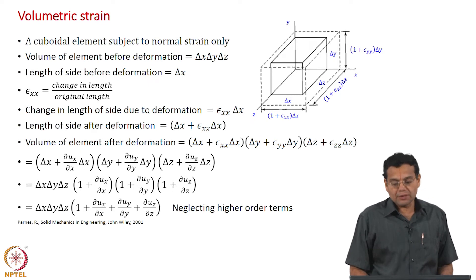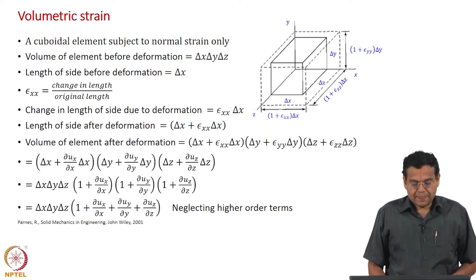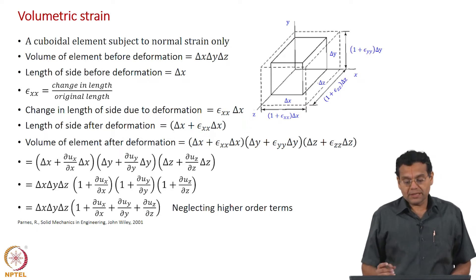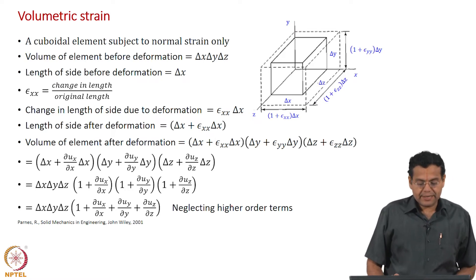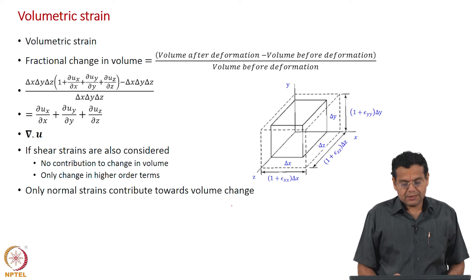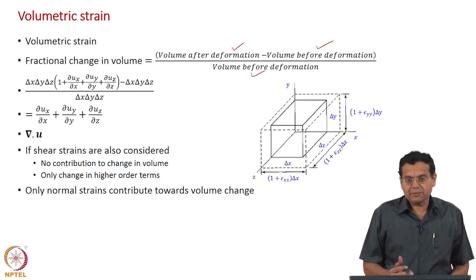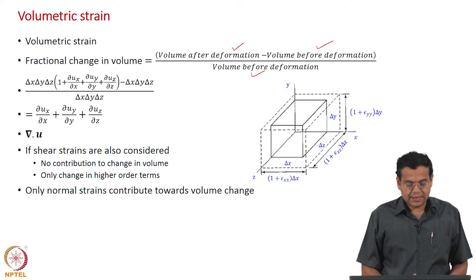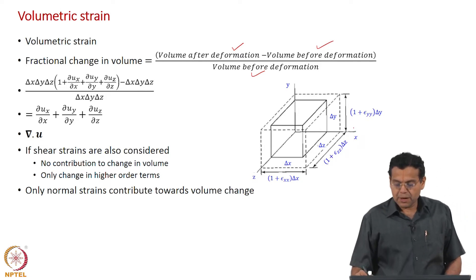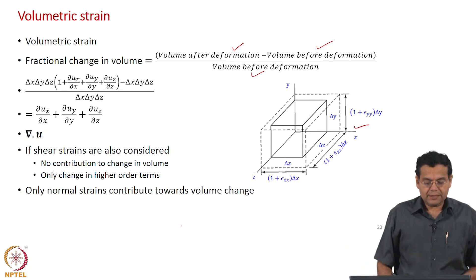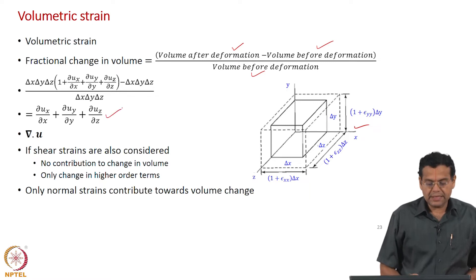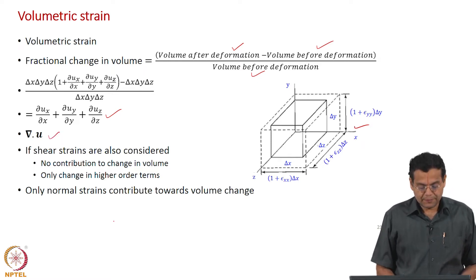We discussed volumetric strain and related it to displacement gradients. Volumetric strain is the fractional change in volume — volume after deformation minus volume before deformation, divided by volume before deformation — similar to the definition for normal strain. Taking a cuboidal element, we proved that volumetric strain equals the sum of three displacement gradients, expressed as the divergence of the displacement field.